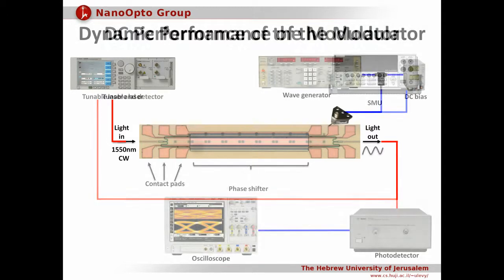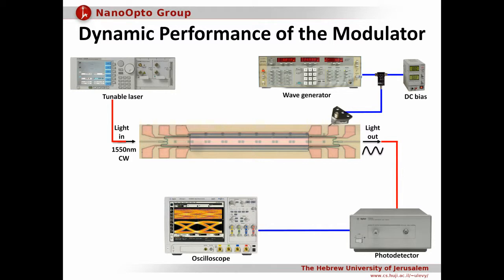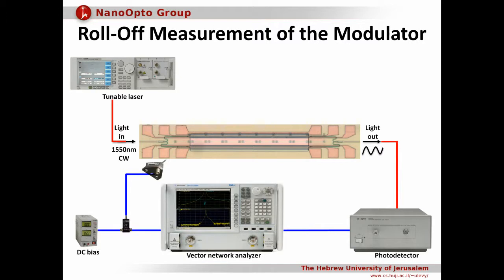Next, the dynamic performance of the device was characterized. For this purpose, the electrical input of the device was connected to the electrical wave generator and the optical output was inspected by a fast real-time oscilloscope. To find the roll-off frequency of the device we use the vector network analyzer.